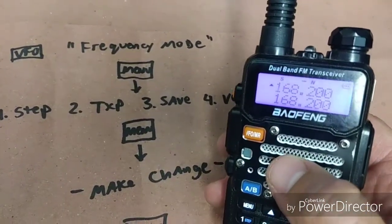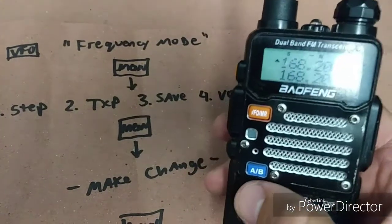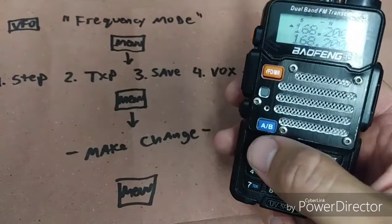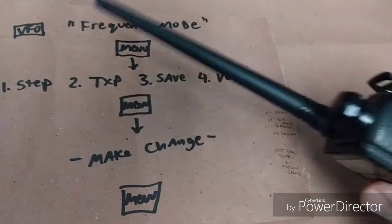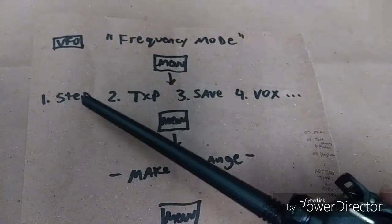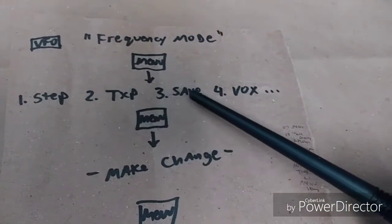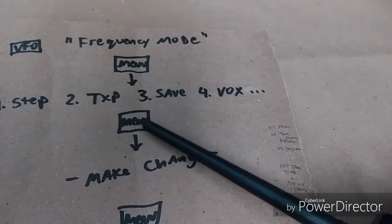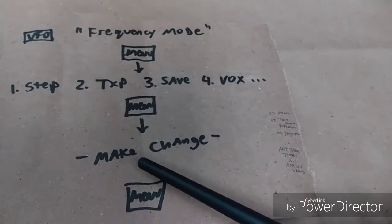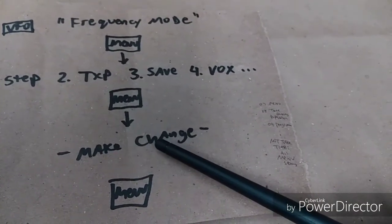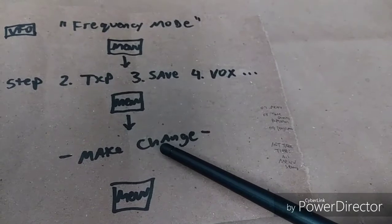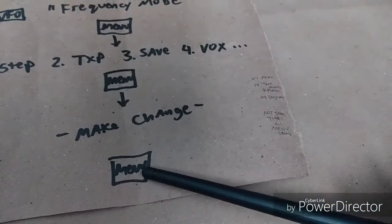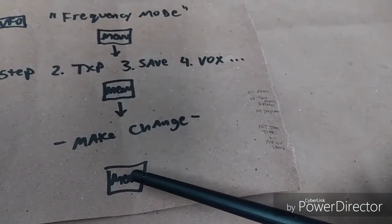Once you're in frequency mode, what I want you to remember about this menu button is you're typically going to have to press it three times in order to make any changes. The first time you press it, it will allow you to cycle through the 40 different settings. The second time you press it, it'll enter you into that setting where you can make changes either by pressing in numbers or scrolling through your options with the arrows. The third press of menu will actually save it.